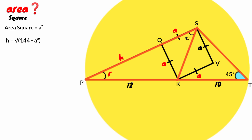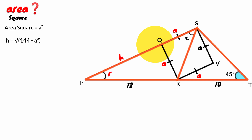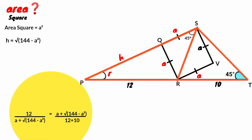So if we take the ratio of their sides: this side facing angle 45 degrees divided by this side also facing angle 45 degrees must equal the same side divided by this. So 12 over (A plus square root of 144 minus A squared) equals (A plus square root of 144 minus A squared) all over (12 plus 10). 12 plus 10 is 22.